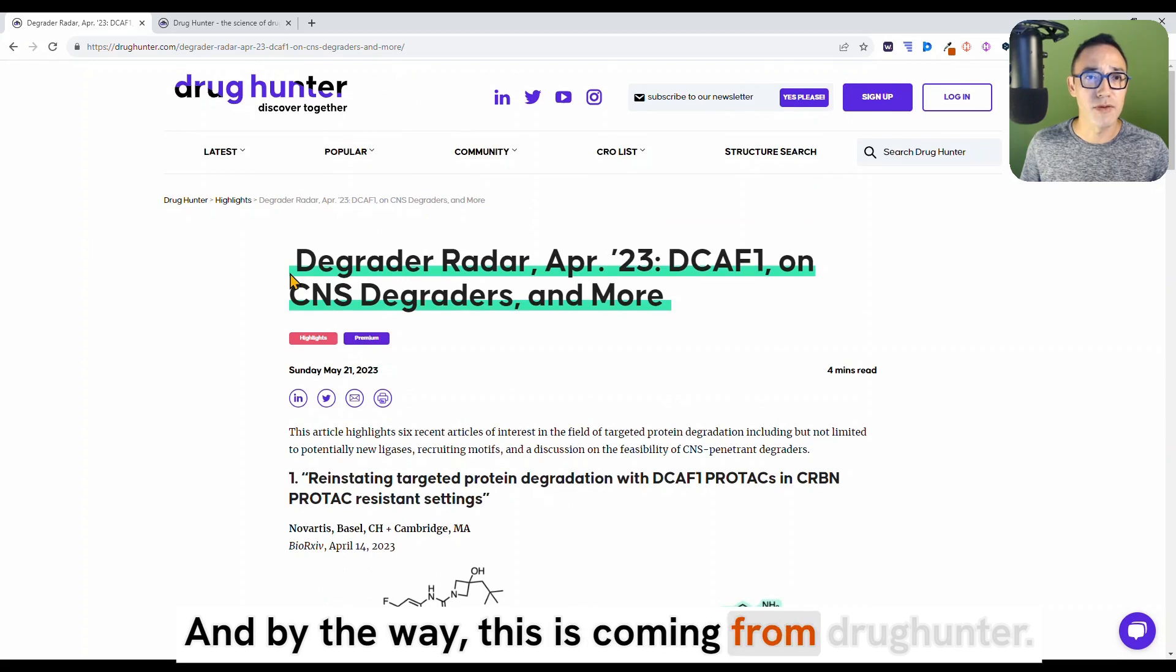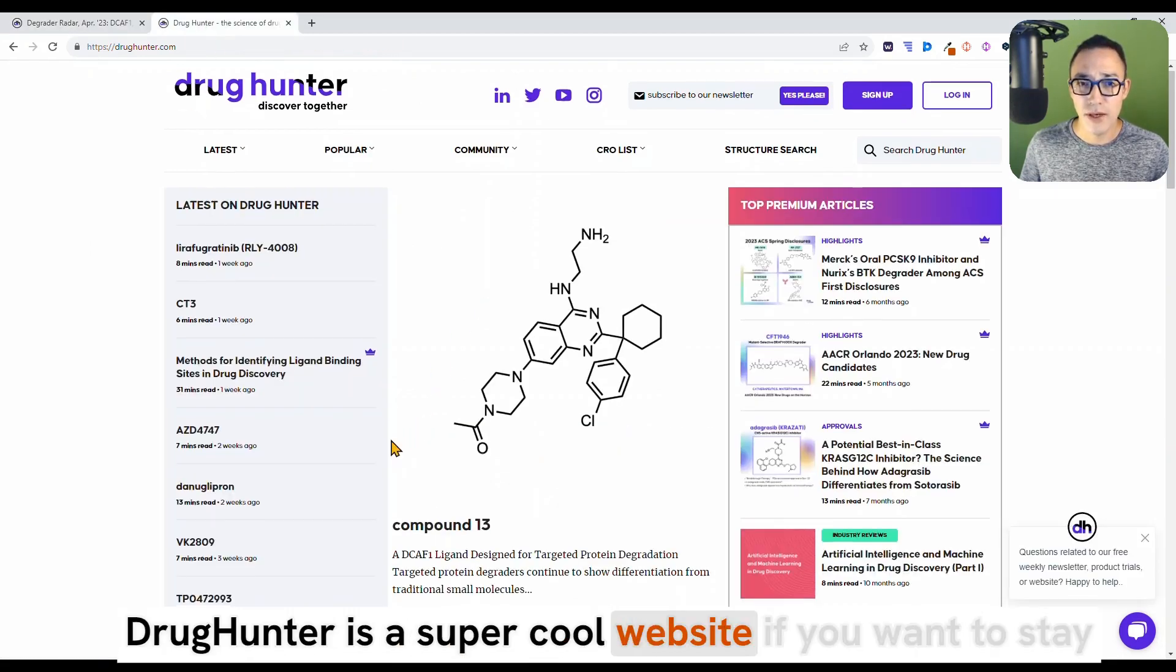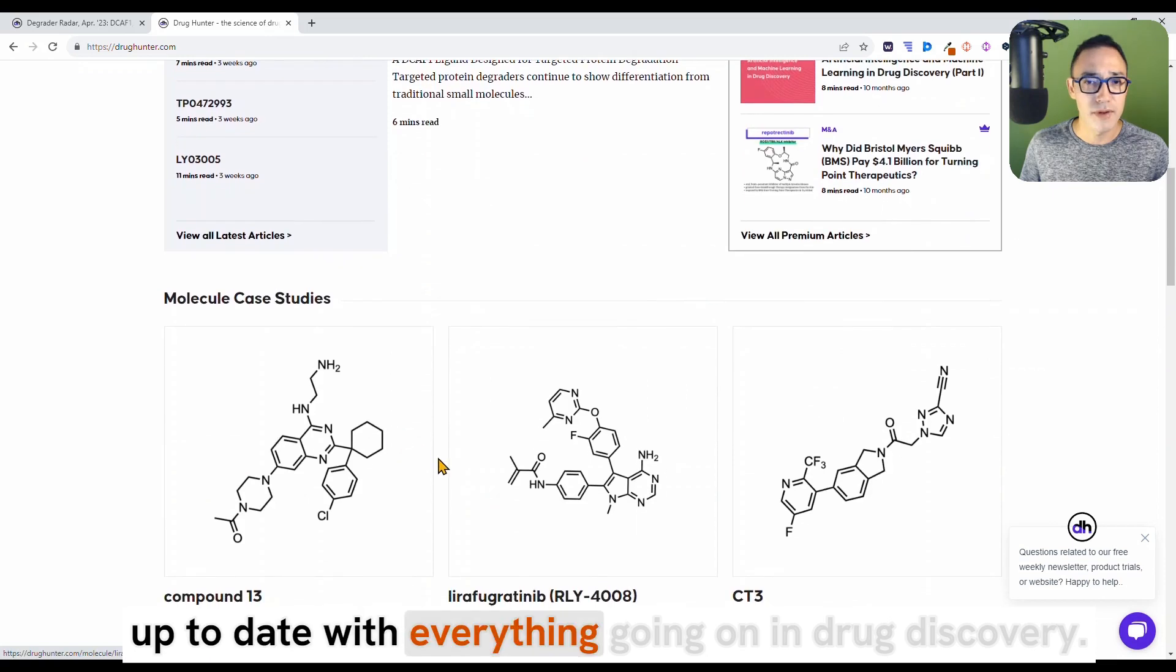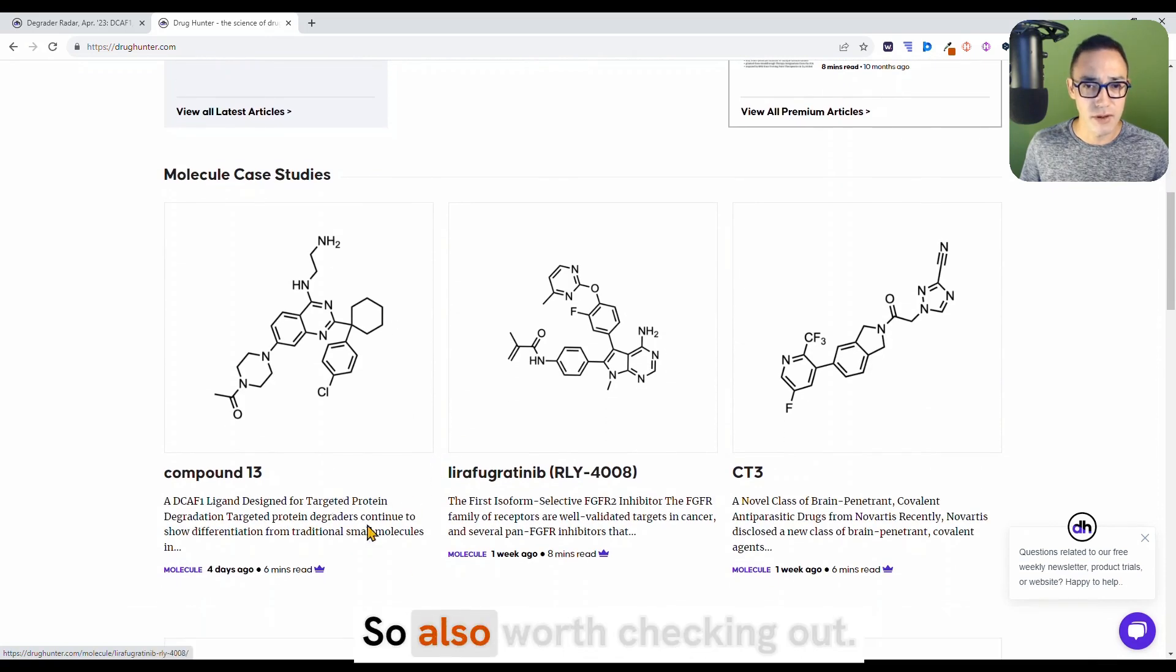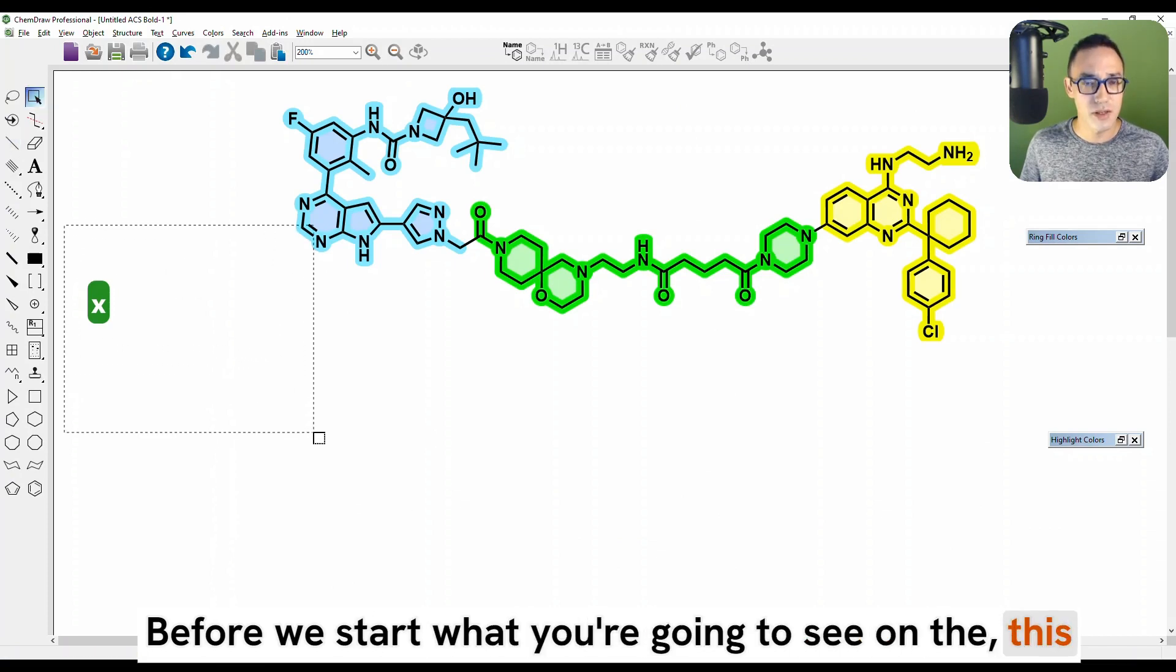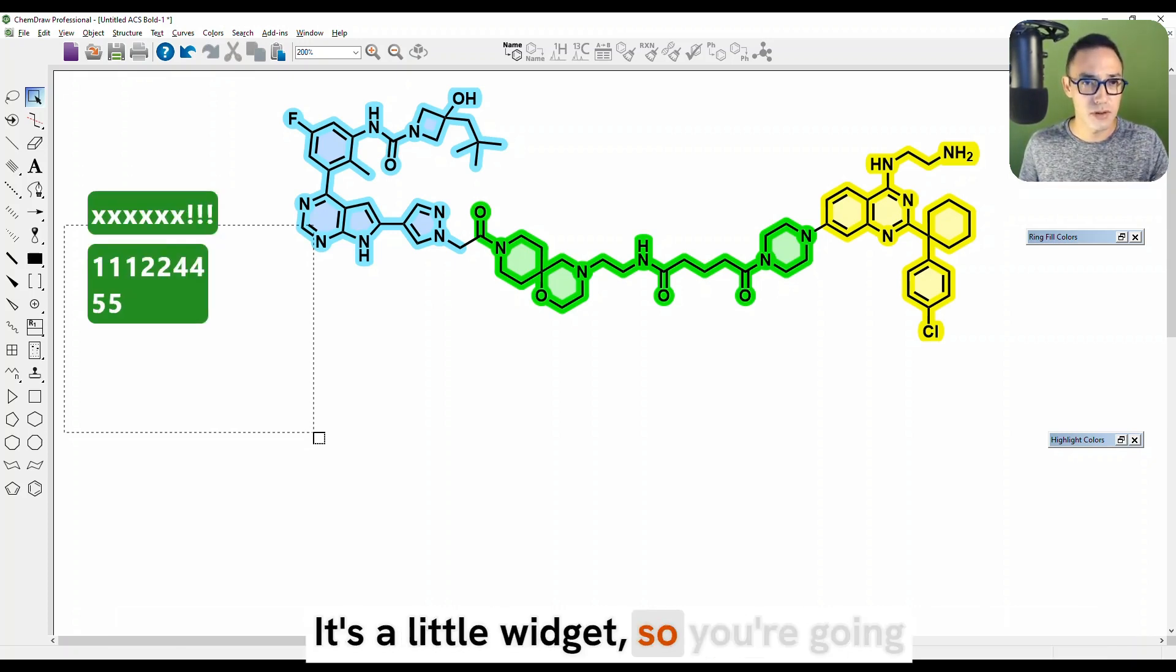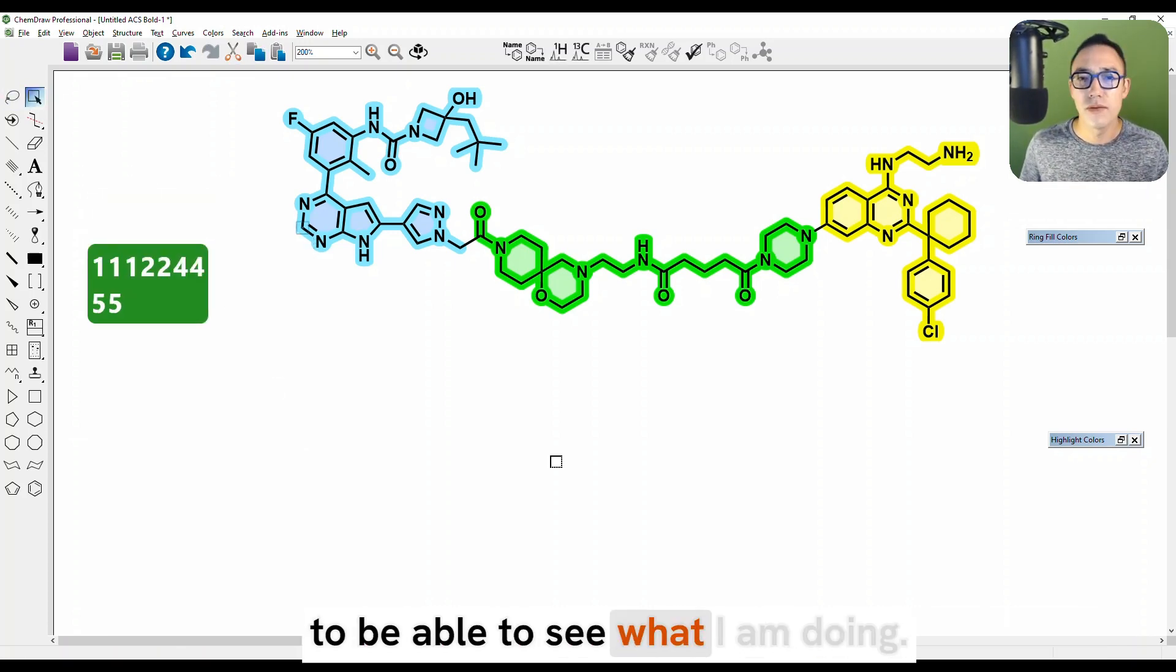And by the way, this is coming from drughunter.com. Drughunter is a super cool website if you want to stay up to date with everything going on in drug discovery. So also worth checking out. Before we start, what you're going to see on this part of the screen is what I am typing on my keyboard. It's a little widget. So you're going to be able to see what I am doing.